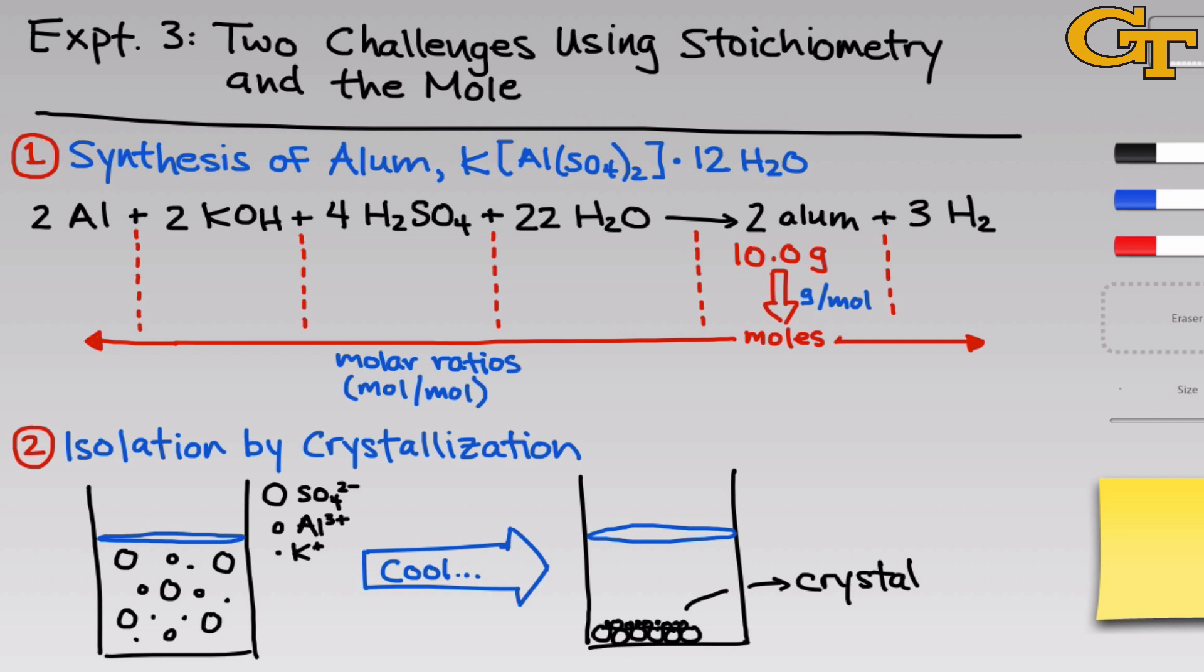We can then filter this now heterogeneous mixture of liquid and solid to isolate the solid from the liquid. If we've done our jobs correctly, then the mass of solid alum should be approximately 10 grams. Although if it's less than 10 grams, we know that we obtained less than 100% yield.